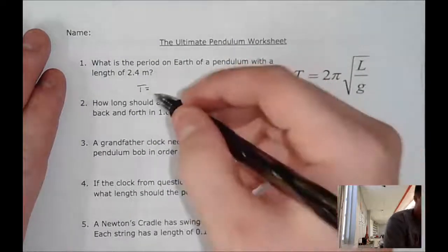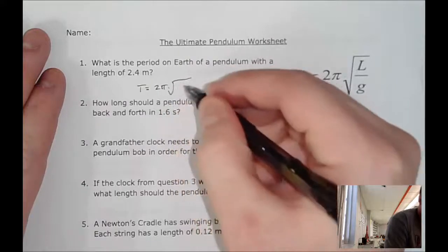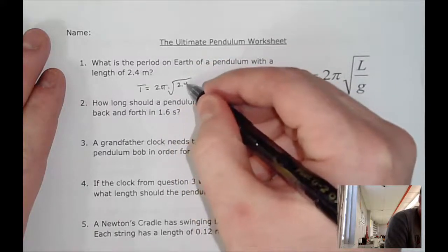So we're going to do 2π times the square root of our length, which is 2.4, over the gravity, which is 9.81.